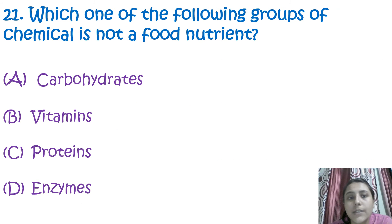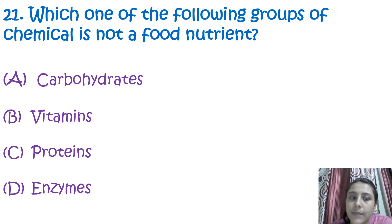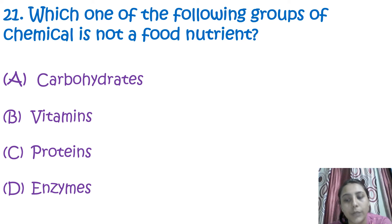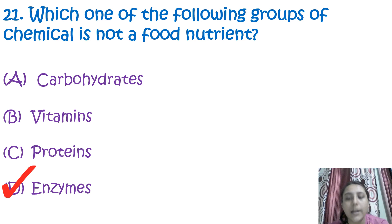The next question is: which of the following groups of chemicals is not a food nutrient? Carbohydrates, vitamins, and proteins are nutrients we intake in our diet, but enzymes are not food nutrients.